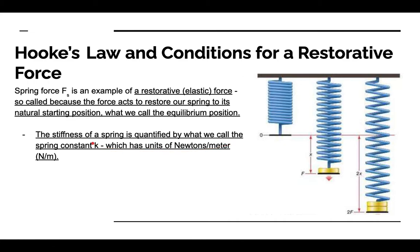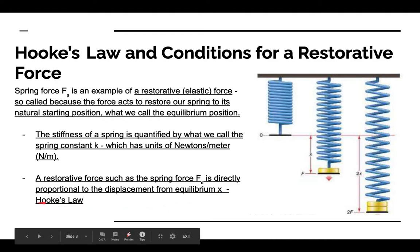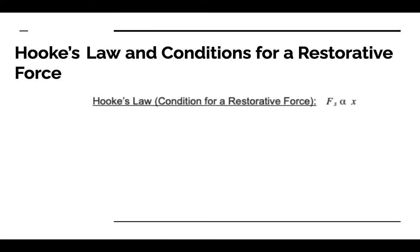In terms of quantifying what we've been talking about, we quantify the stiffness of the spring by what we call a spring constant k, which has units of newtons per meter. It gives you an idea of the amount of force — newtons — needed to stretch the spring a certain distance, hence newtons per meter. The more stiff the spring, the higher the spring constant, meaning more force is required to stretch it a given distance. Additionally, the restorative force F_s is directly proportional to the displacement from equilibrium x — this is Hooke's Law.